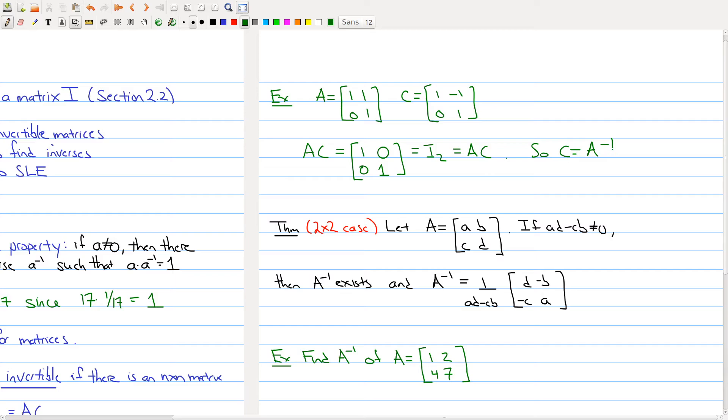Inverses do exist; we have a very simple example. So the question is, how do you find the inverse of a matrix? In the next part of this lecture we'll deal with any matrix, but for the two by two case there's actually a nice formula.